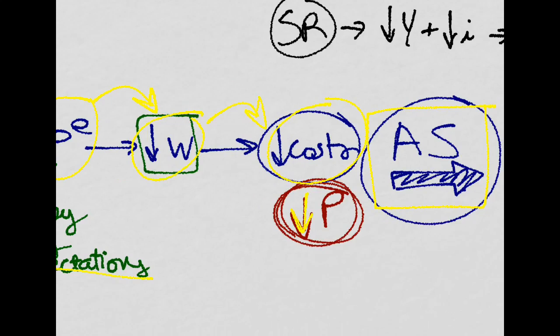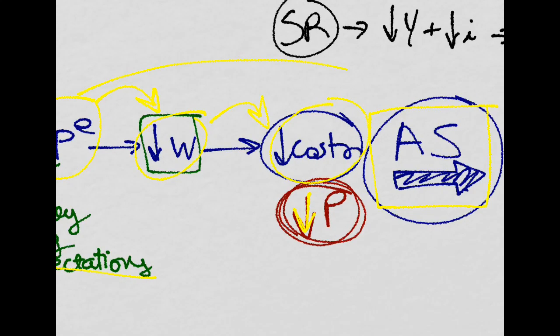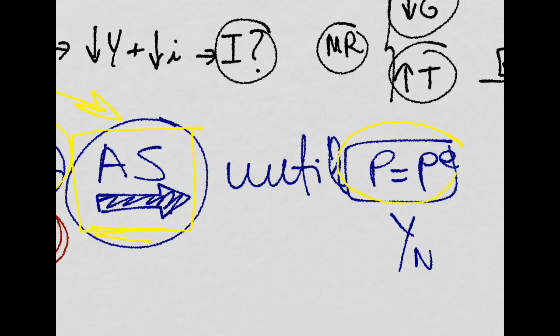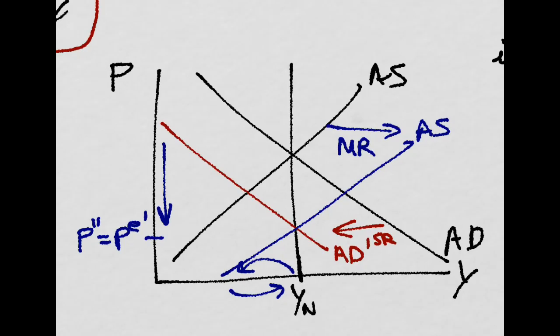Because this was provoked by a change in the expected price level. And the aggregate supply will shift until prices meet the expected price level again. And we are at potential output. So this is basically what happened.